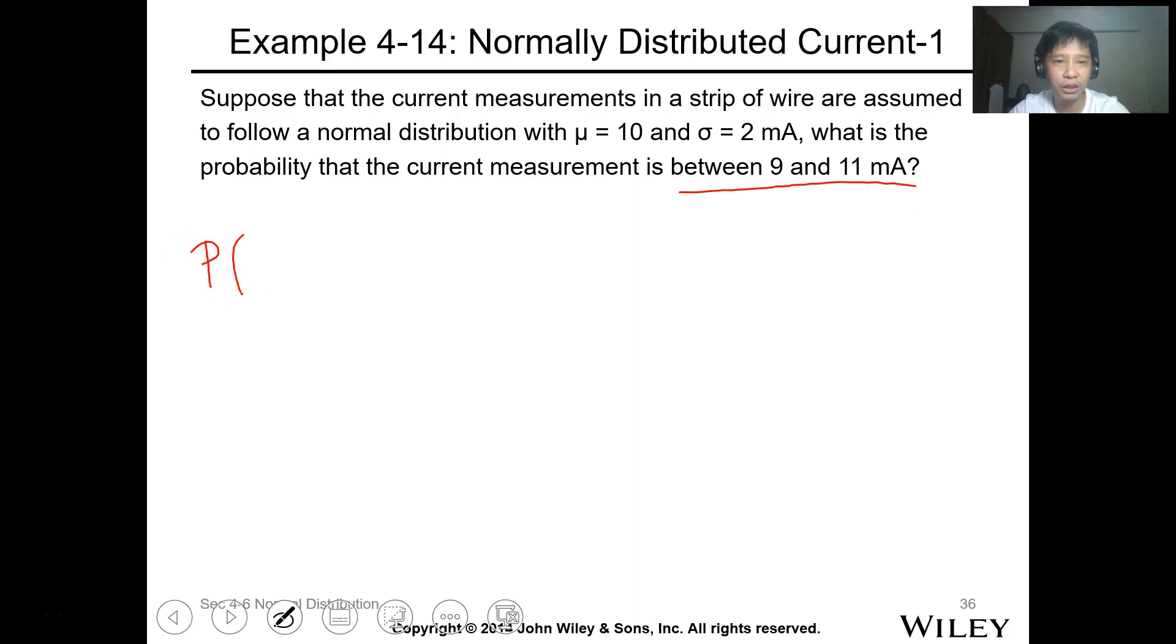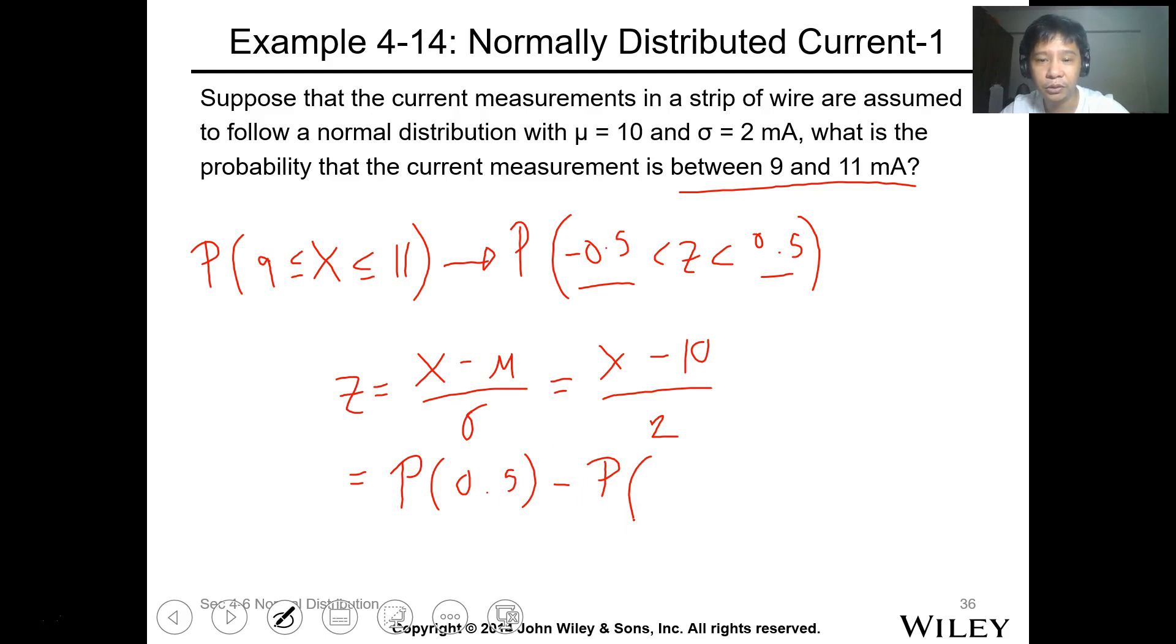So this is the probability where x is between 9 and 11. You'll transform it into probability of Z. So we need to know the value of this. Z will be transformed using x minus mu over sigma. So this is x minus 10 over 2. If 9 is used, 9 minus 10 divided by 2, that's negative 0.5. For 11, 11 minus 10, so 0.5.